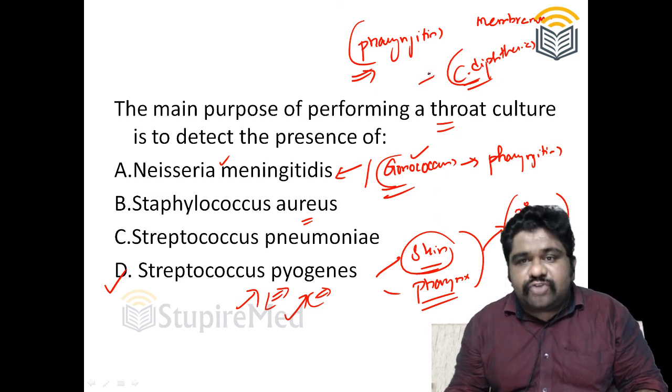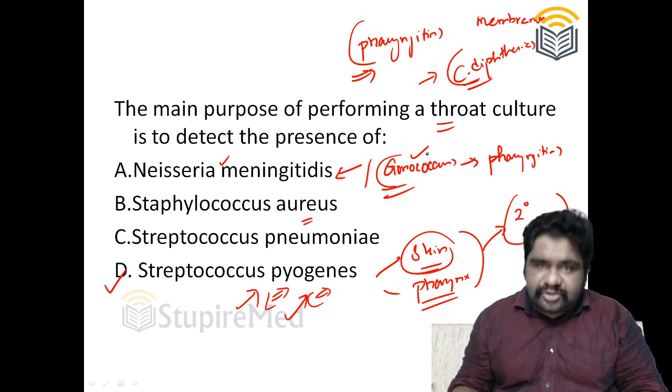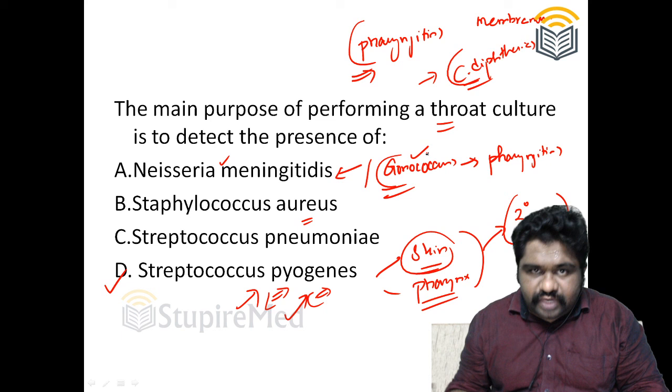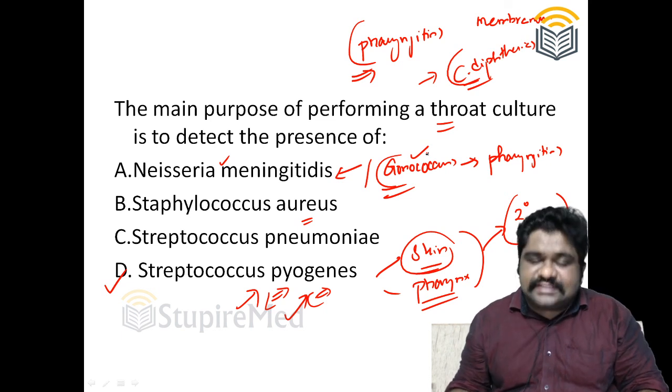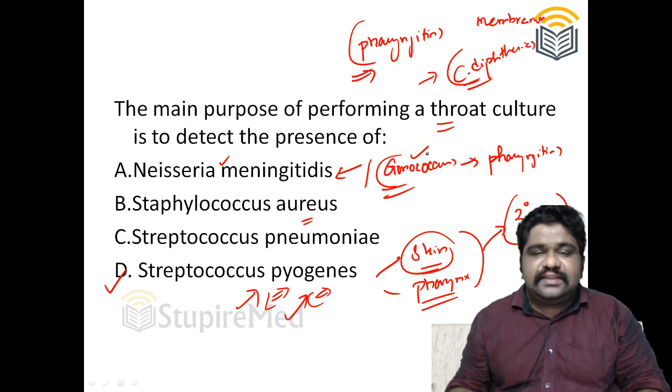Similarly, for Corynebacterium diphtheriae, you can go for the erythromycin group of drugs, which are inhibitors of protein synthesis. Thank you very much.